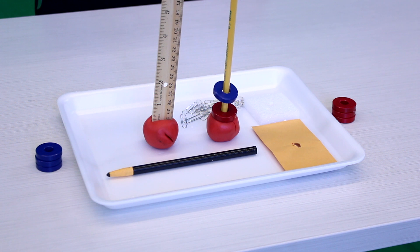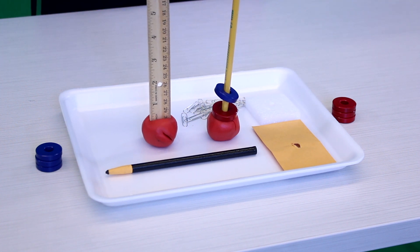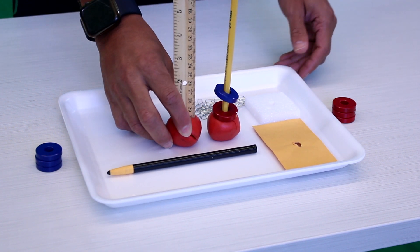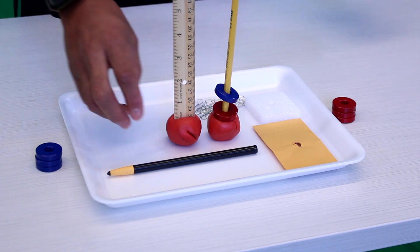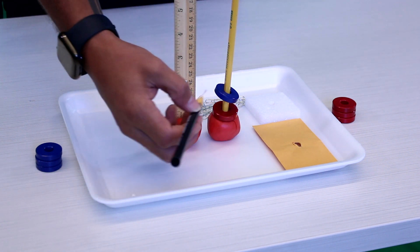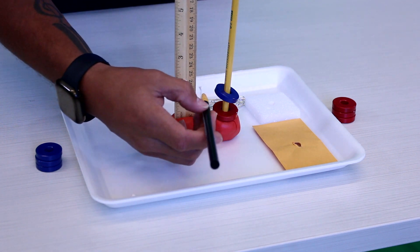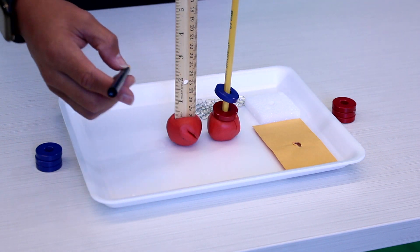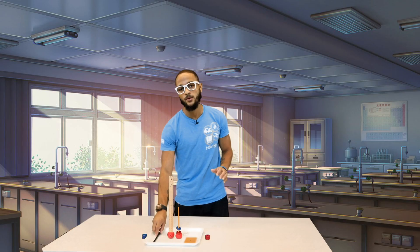Now we can use our ruler here to actually measure to see how much it actually retracts. It's about, I would say about one and a half inches, give or take.